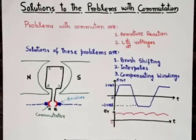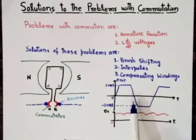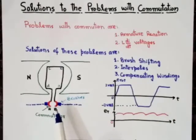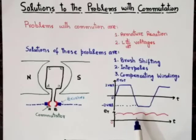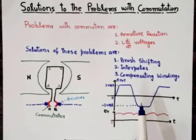In a DC machine, commutation is a very important process through which AC production in DC machines is converted into DC at the output terminals. As you can see in this figure, these are the AC internal generated voltages in the DC machine and this is the output DC voltage at the output terminals. Commutator segments are placed at the rotor of the DC machines — commutator segment A and commutator segment B — which are used to convert AC internal generated voltages into DC.